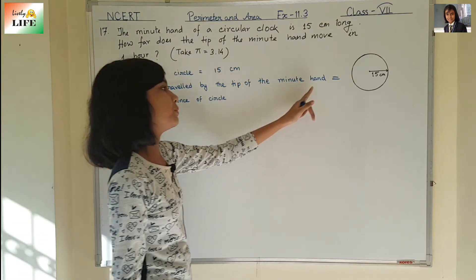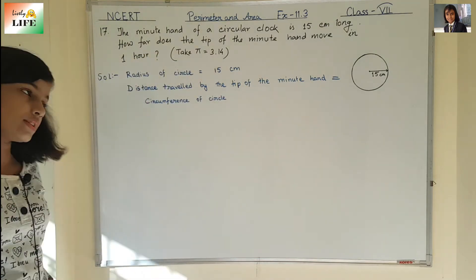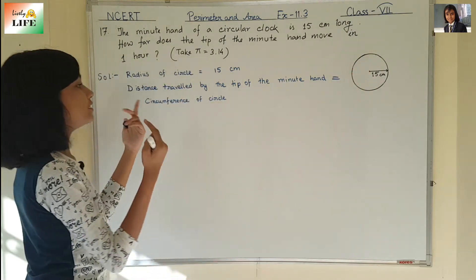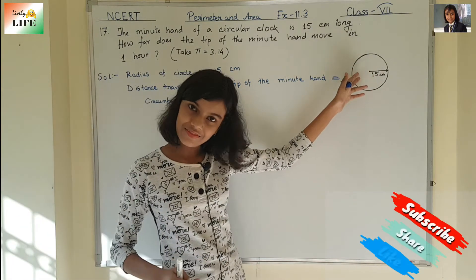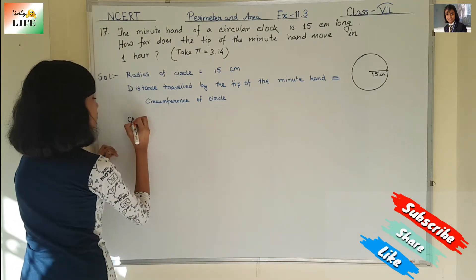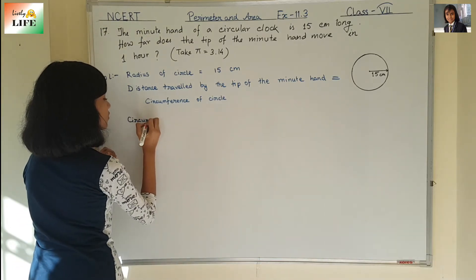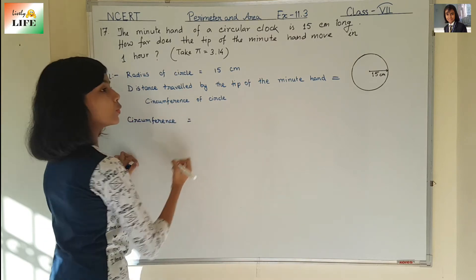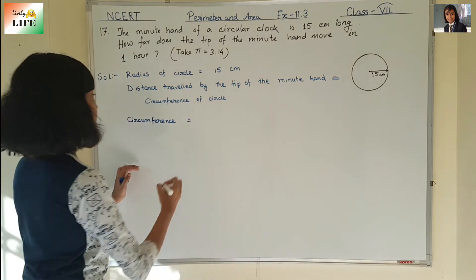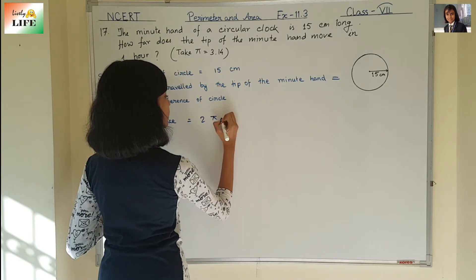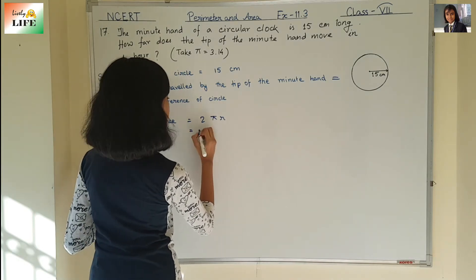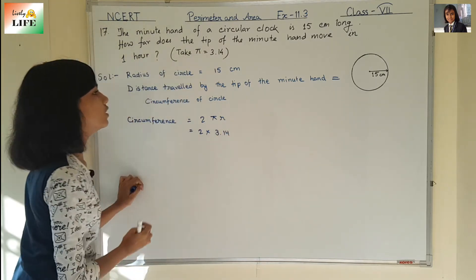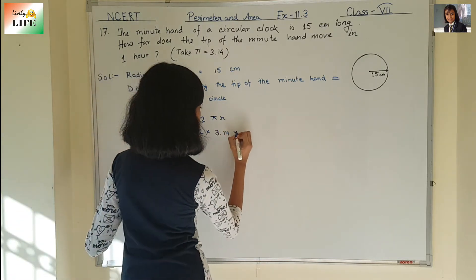The distance travelled by the tip of the minute hand is equal to the circumference of the circle. The formula for the circumference of a circle is 2πr. So that is 2 into pi, which is 3.14, and the radius is 15 centimeters.